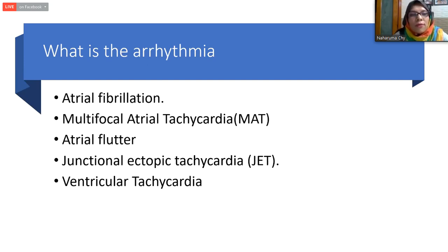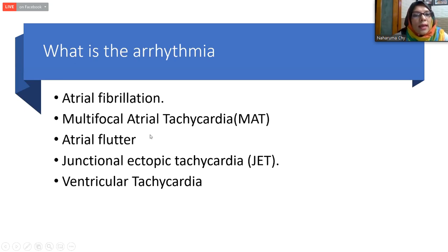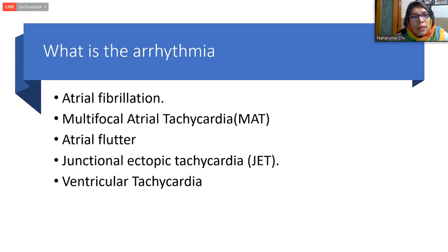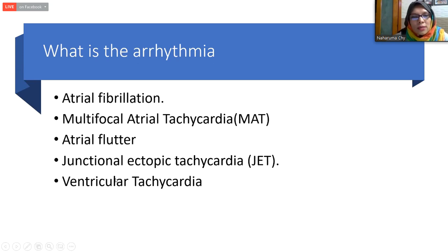We thought differentially: first, it might be atrial fibrillation because of the irregularly irregular heart rate. Second, multifocal atrial tachycardia because of variable P morphology and different axis. Third, atrial flutter with variable block. Less likely was junctional ectopic tachycardia, as it is usually present in early post-operative days, and ventricular tachycardia was also less likely because the monophasic irregularly irregular pattern does not match.